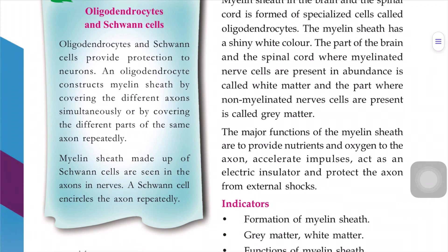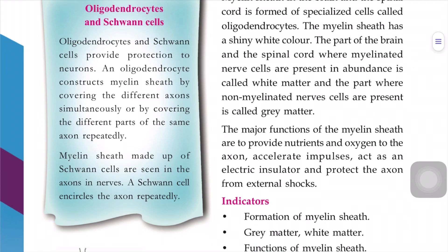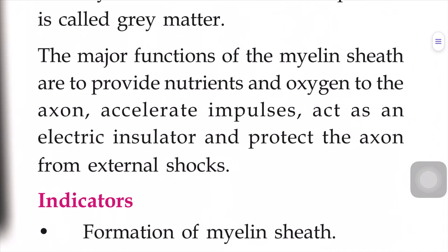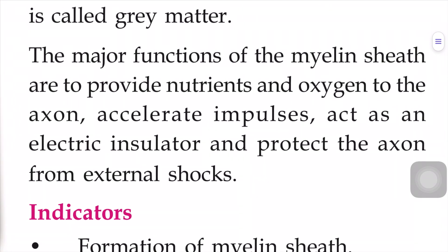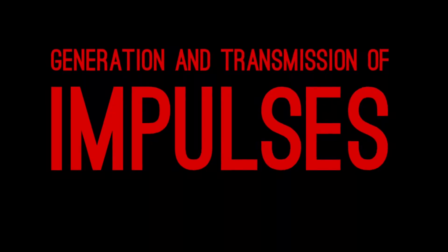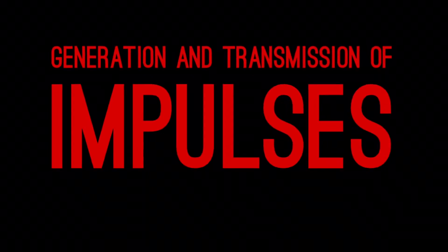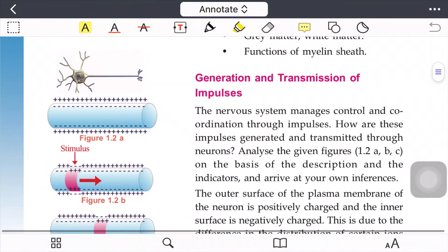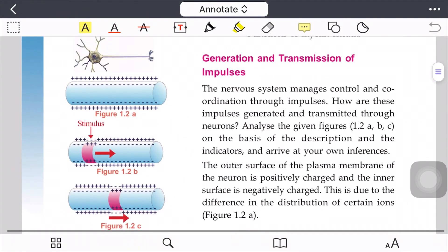The axon acts as an electric insulator. The myelin sheath helps to protect the axon from external shocks and controls the transmission of impulses.